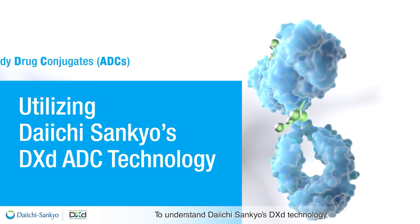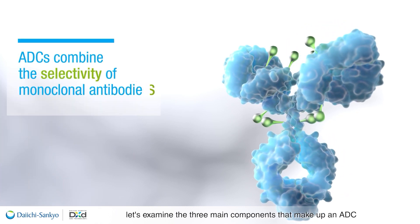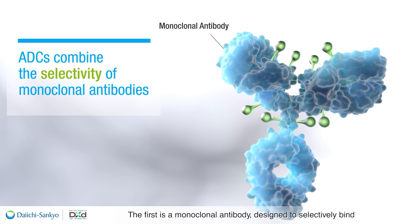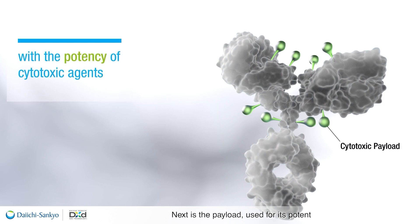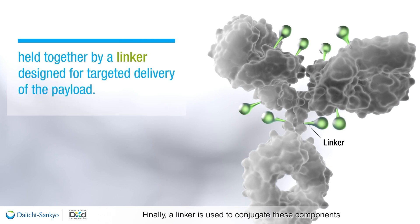To understand Daiichi Sankyo's DXD-ADC technology, let's examine the three main components that make up an ADC and the important roles they play. The first is a monoclonal antibody designed to selectively bind to cell surface proteins that are expressed in cancer cells. Next is the payload, used for its potent cytotoxic effects against target and neighboring tumor cells. Finally, a linker is used to conjugate these components to facilitate targeted delivery of the payload.